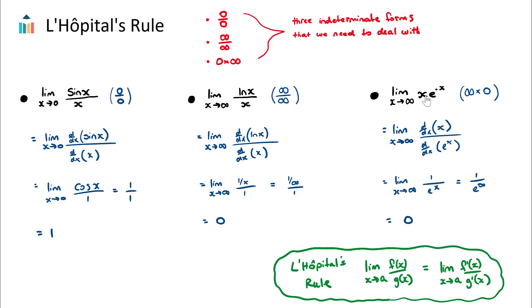Let's try the third example. Before taking the derivative, we can express this as a fraction since we want a function over a function. We can make e to the negative x become e to the x on the denominator using our index laws. Now taking the derivative of the numerator and denominator — this is L'Hopital's rule — the derivative of x becomes one, and the derivative of e to the x is just e to the x. Substituting in infinity gives one over e to the power of infinity. One over infinity is zero — it's not one of our three indeterminate forms. So the answer is zero.